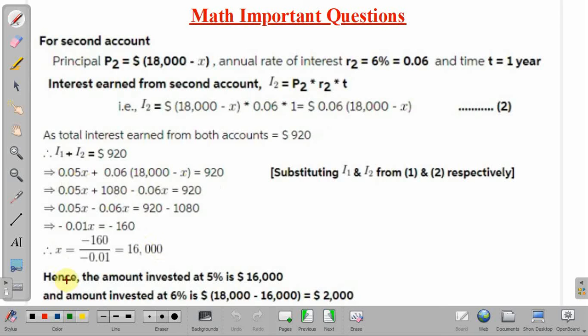Hence, we can say the amount invested at 5% is $16,000 and the remaining amount which was invested at 6% is 18,000 minus 16,000, that is $2,000.